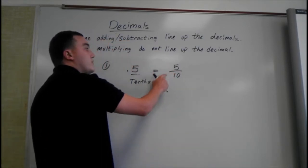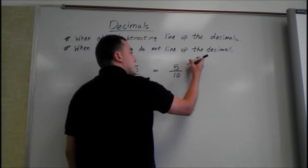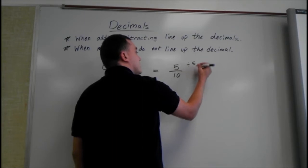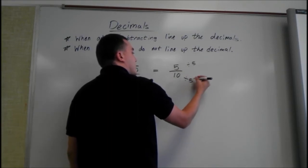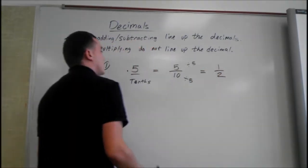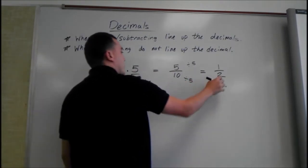To reduce 5 over 10, we know 5 goes into both of these, so we can divide by 5. If you do it on top, you've got to do it on the bottom, make this 1 half. So 0.5 as a fraction would be 1 half.